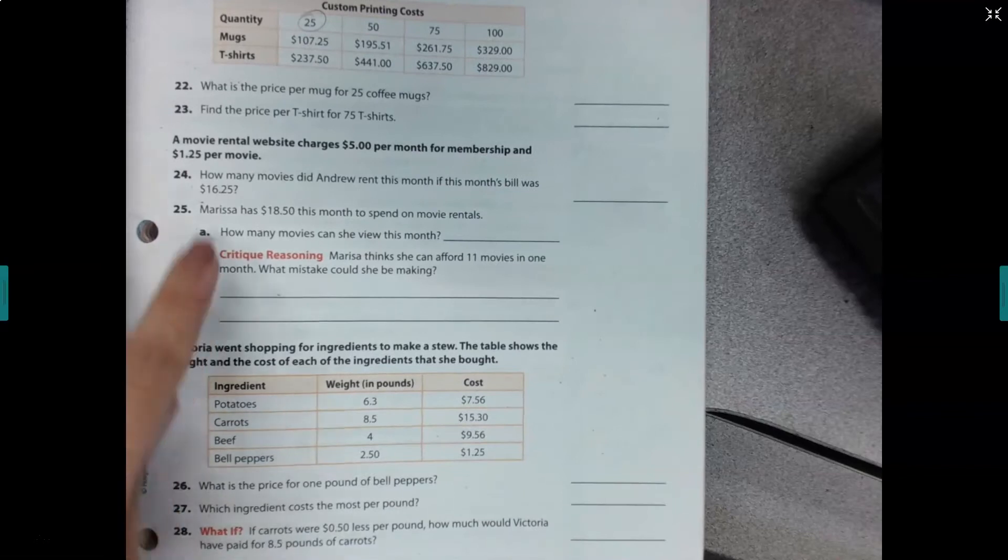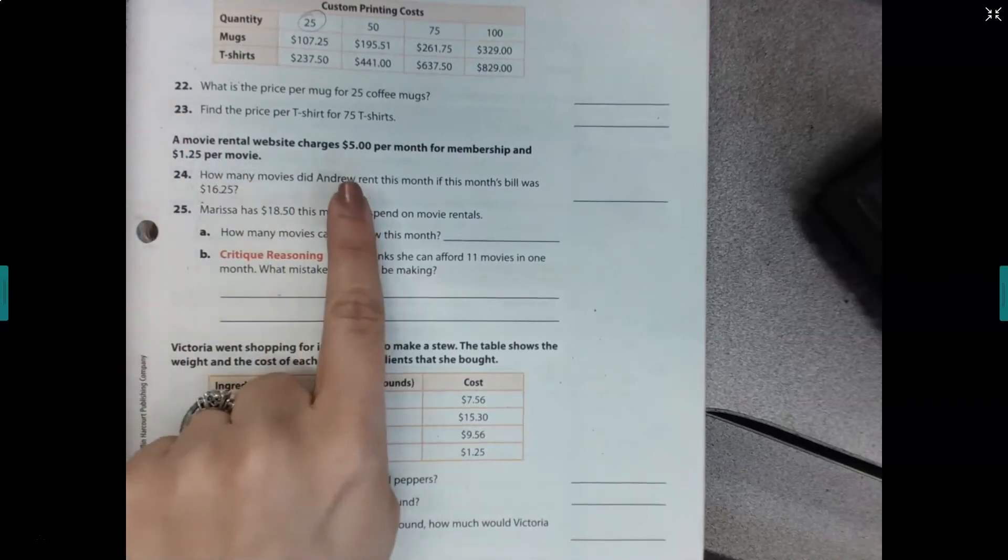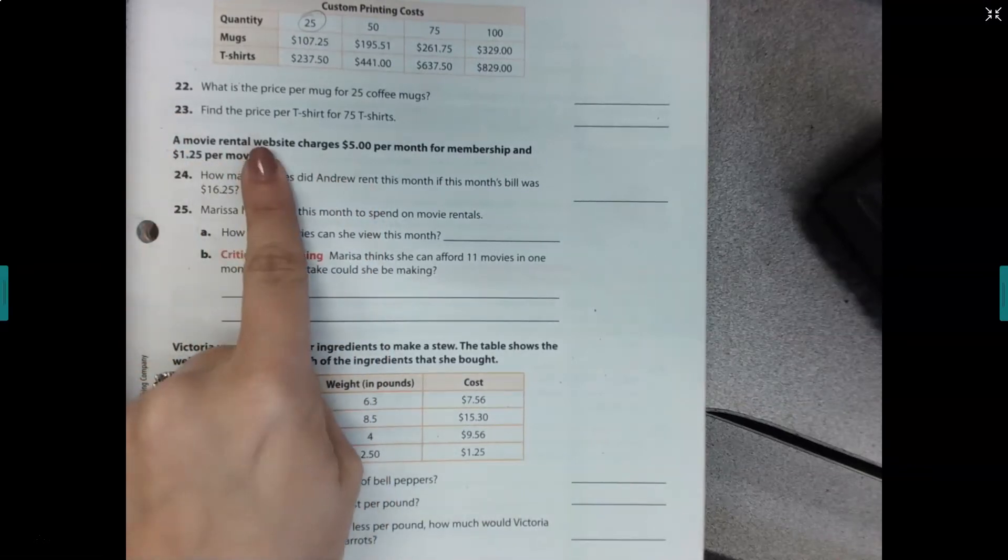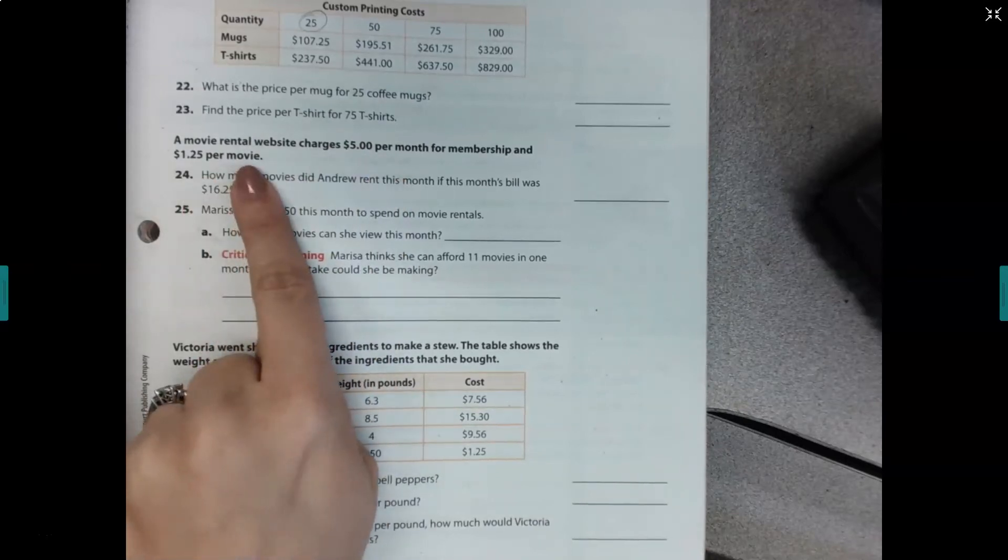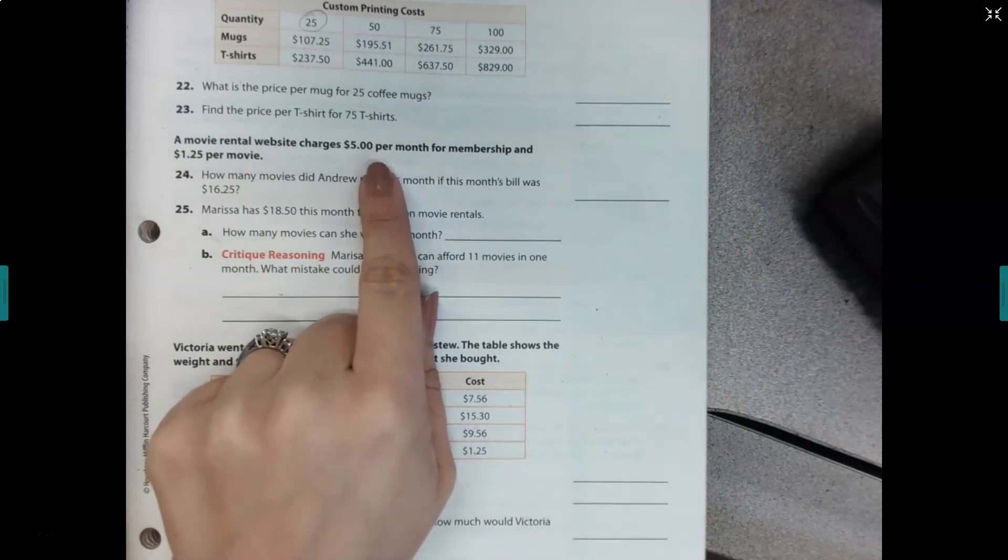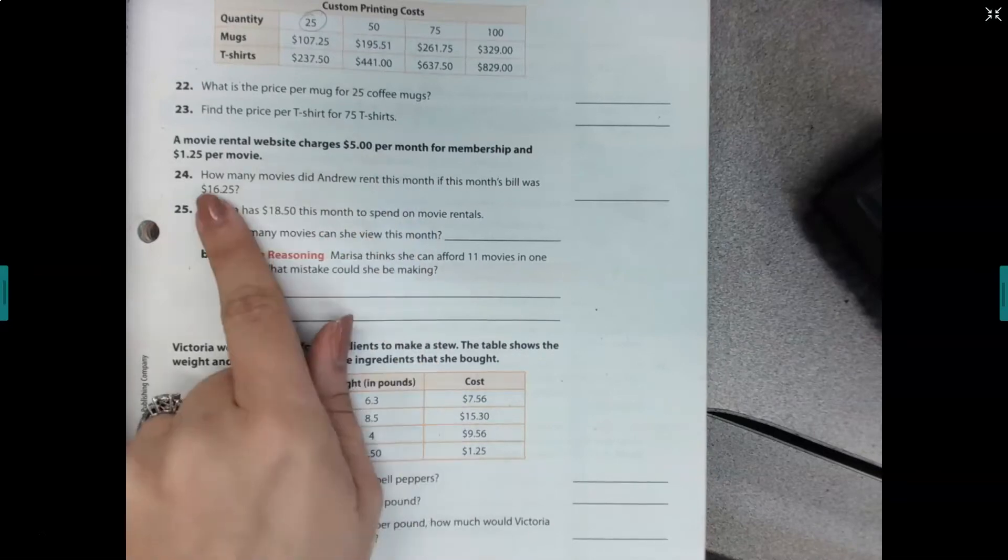Let's look at this next set of problems. This is about a movie rental website. So it says, a movie rental website charges $5 per month for membership and $1.25 per movie. This means that no matter how many movies you buy, you're going to pay $5 every single month, no matter what.